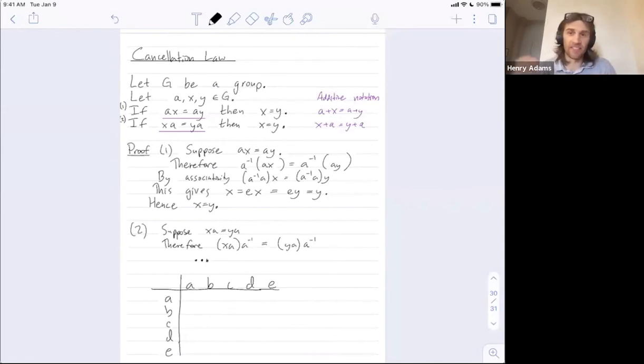And let's say I don't tell you much of the multiplication table. All I tell you is what is, say, d multiplied by various things. So maybe d times a is b, d times b is c, d times c is e, d times d is a, and let's say d times e is b.